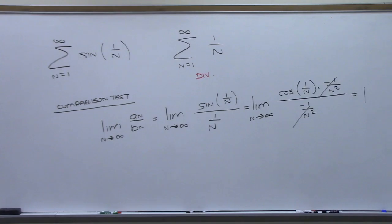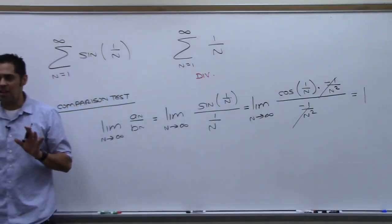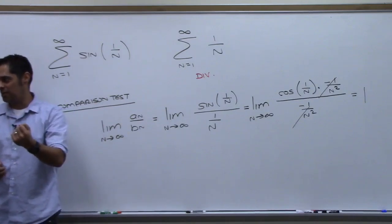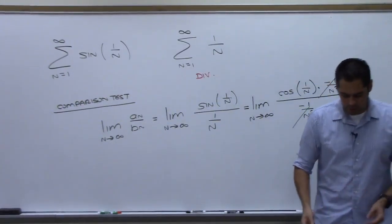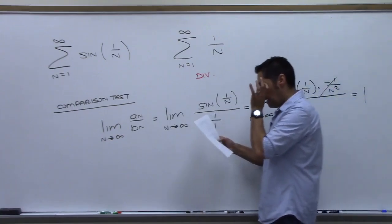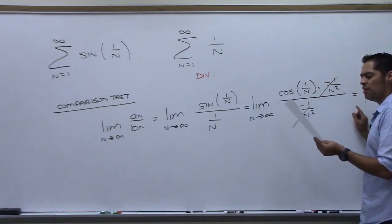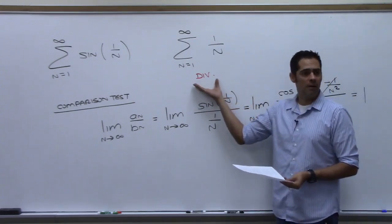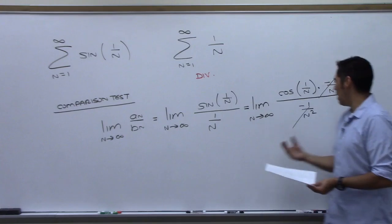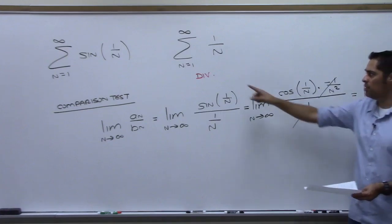What does this mean? You have to draw the right conclusion. If the limit turns out to be a positive real number, then both series converge or both diverge. I chose a divergent series — the harmonic series — and got a positive real number. So they both have to do the same thing: that sum of sine(1/n) diverges.